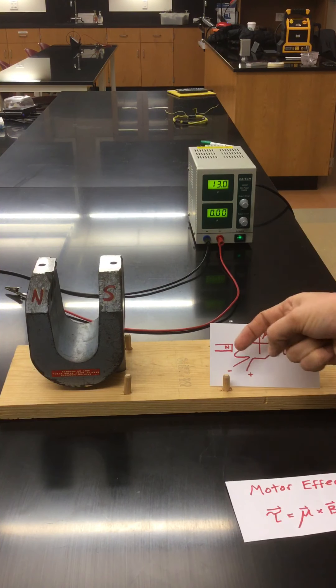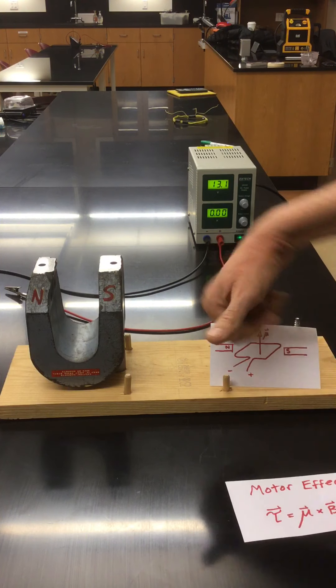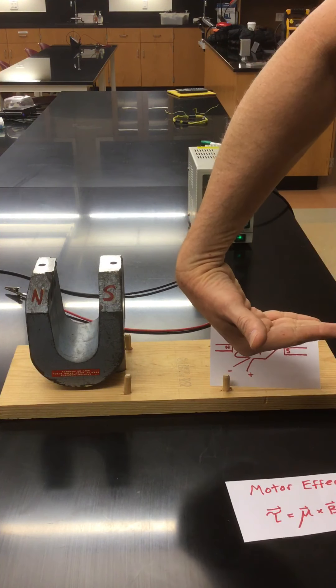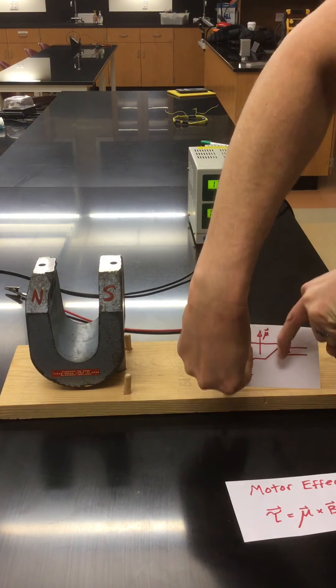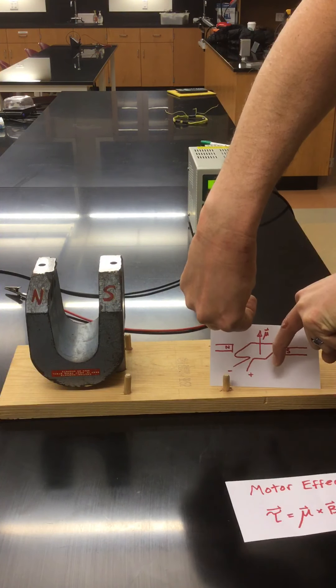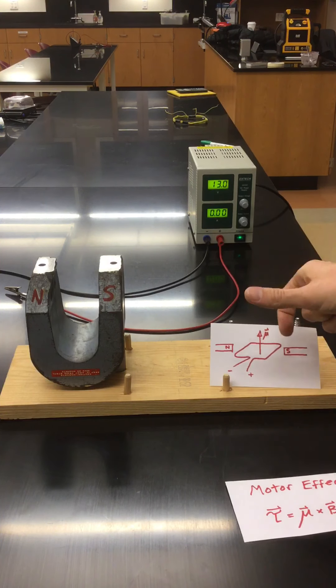Then the current flowing out of the note card over in this segment of wire also sits in the magnetic field. It points this way. So that side of the wire would get forced up. So what we have is an upward and downward force on opposite sides of the wire, which would produce this torque.